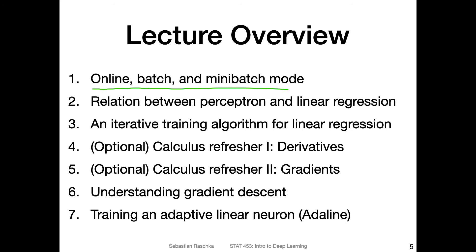And after this overview, we will talk about the relationship between the perceptron and linear regression. Then we will learn about an iterative training algorithm for linear regression. You probably know the closed form solution for linear regression, the matrix formulations, the short dense formula for solving for the weights and the bias unit directly. Here, we will talk about an iterative learning algorithm because it helps us understand how we can train neural networks. It's very closely related.